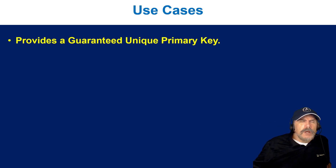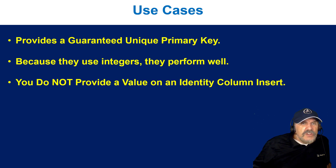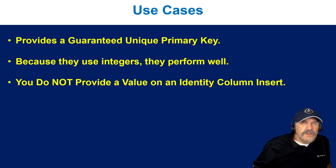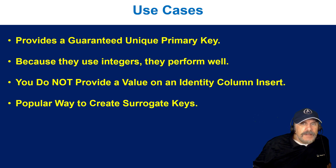What are use cases? It provides a guaranteed unique primary key — that's really the best use case. And because they use integers, they generally perform well, especially in things like joins. You don't have to provide a value on an identity column insert; you insert and ignore the identity column as if it doesn't exist, and it will automatically get an incremental value. It's a very popular way to create surrogate keys in a traditional SQL database data warehouse.